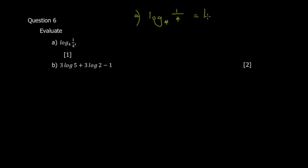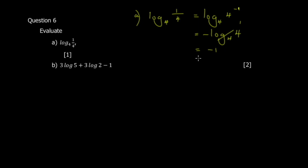One way is to use the law of indices and recognize one quarter as 4 to the power of negative one. Then according to the laws of logarithms, you take the negative one and bring it out, so you get negative one. This is the fastest way to compute it.